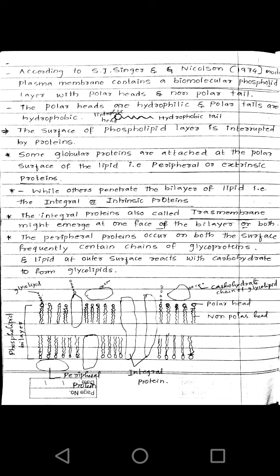According to Singer and Nicholson's 1974 model, the plasma membrane is mainly made up of proteins and phospholipids. The proteins in the plasma membrane are alpha globular proteins. In these alpha globular proteins, we see mainly two types: extrinsic proteins and intrinsic proteins.